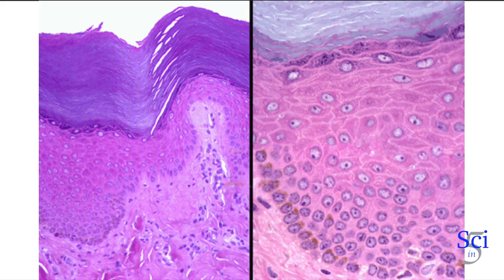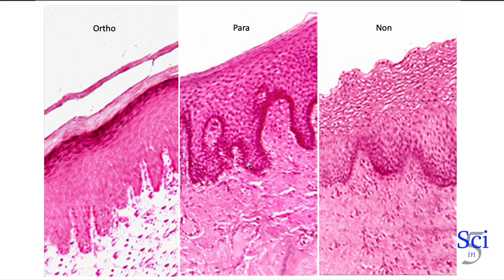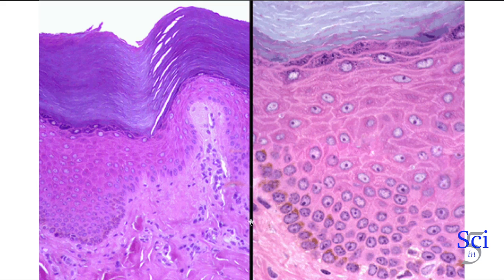Looking at the next slide, it's a zoom-in of the basal layer activity. Within the epithelia, within this basal layer, we're going to have specialized cells. One of those specialized cells are the melanocytes — the brown areas coming off these cells are your melanocytes. They're found in the basal layer and are responsible for the different pigmentation that shows up.